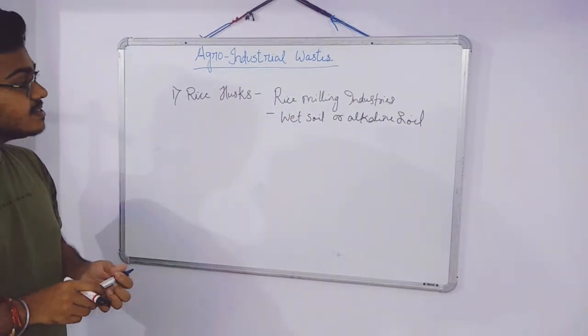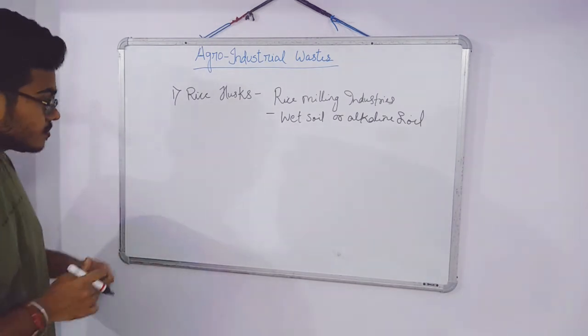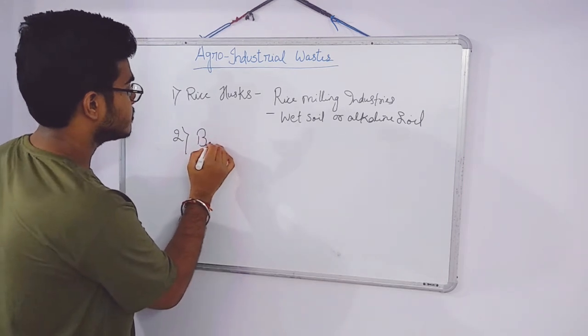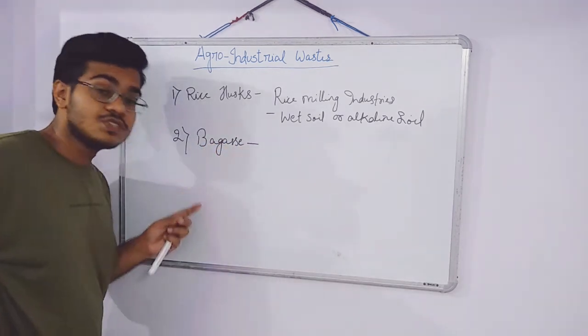The second one is bagasse. This is one of the most important byproducts from the sugar industries.